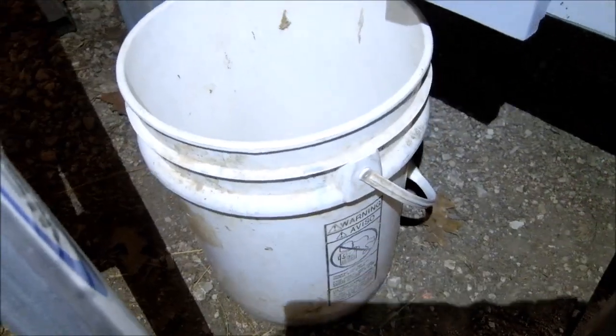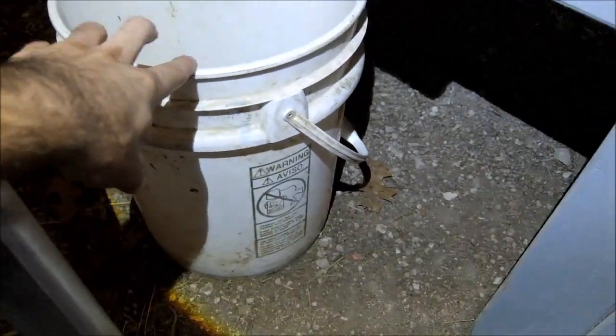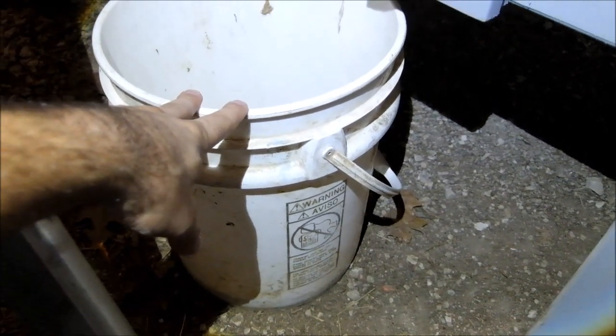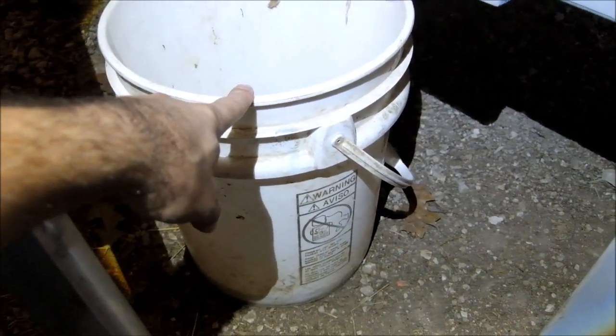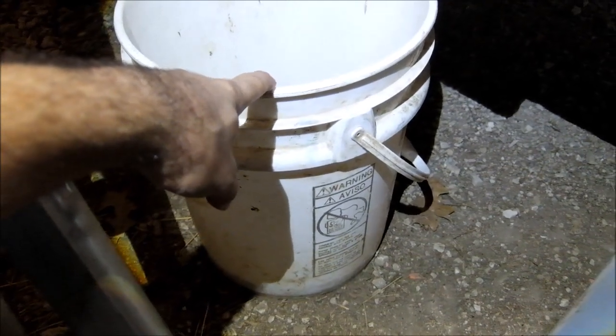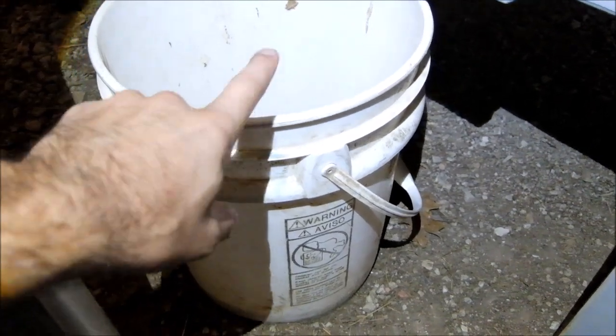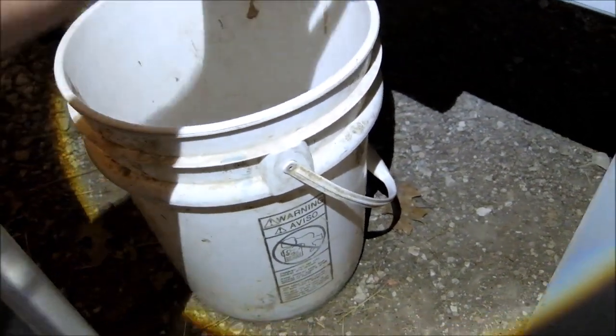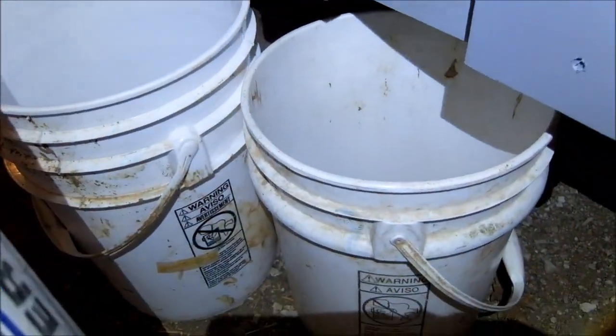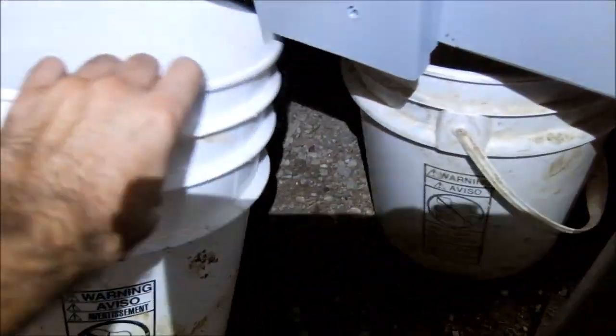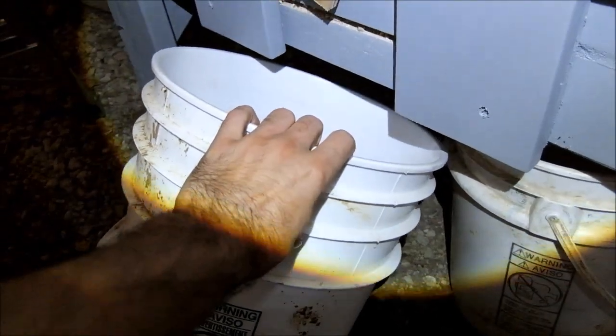The easiest way to figure it out is just take a five-gallon bucket, which, Google it, but I think it's about a cubic foot. Dump your feed in there, see how much a feed bag is. Mine in this case was close to a six-gallon, which is another reason why I made this height, because I happen to have six gallon buckets and I wanted a six-gallon bucket to fit.